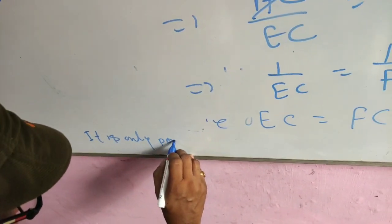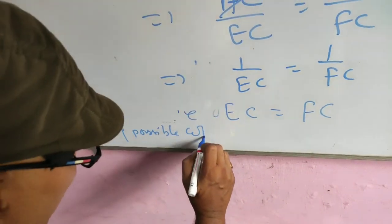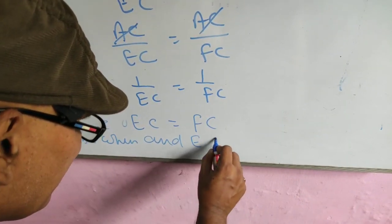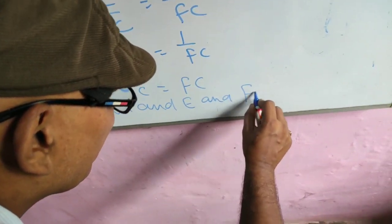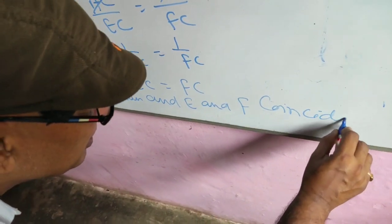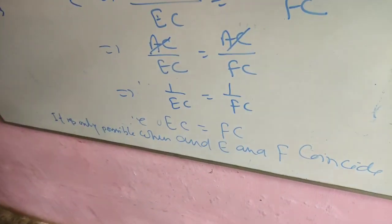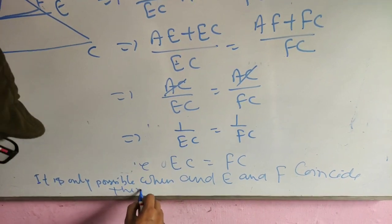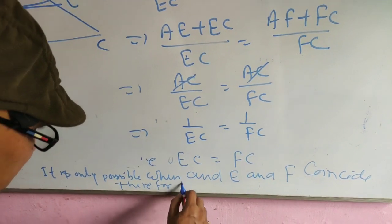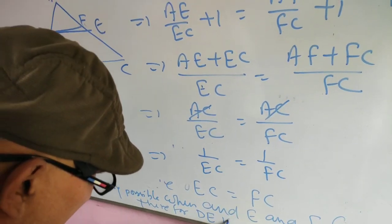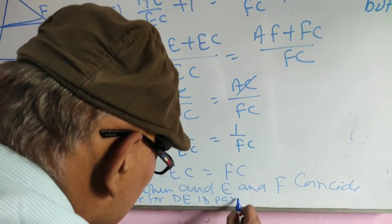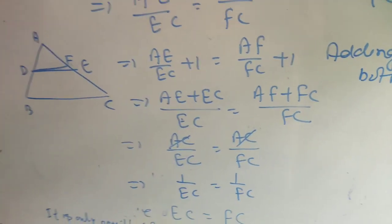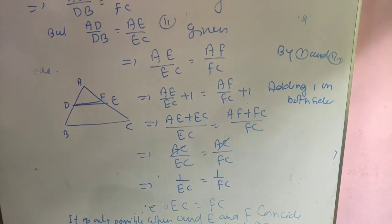This is only possible when E and F coincide. Therefore DE is parallel to BC. This is the Converse of the Basic Proportionality Theorem.